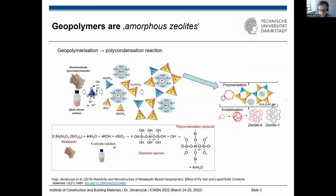We can see this polycondensation reaction with metakaolin as an example. We need aluminosilicates and activate them with an alkali silicate solution — it is a two-component reaction. We dissolve the metakaolin, the dissolved species polymerize, and upon further polycondensation — with water as a byproduct — we form large aluminosilicate polymers connected by oxo bridges.